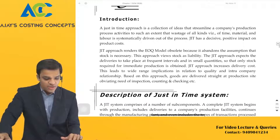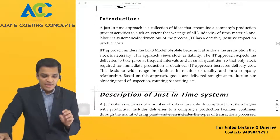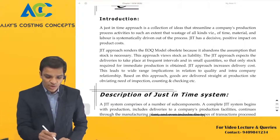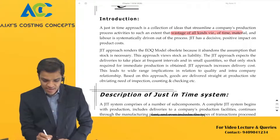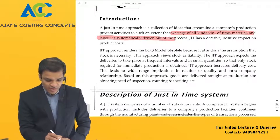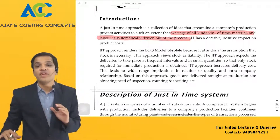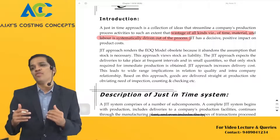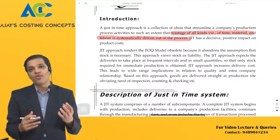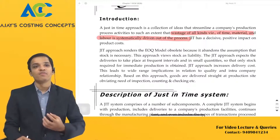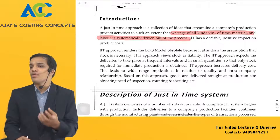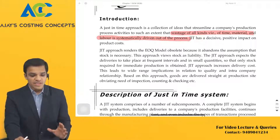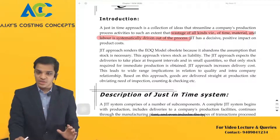Just-in-time is a collection of ideas that streamline a company's production process to such an extent that wastage of all kinds — time, material, and labor — is systematically driven out of the process. So there is no wastage. When you follow minimum and maximum order levels, there are chances of product wastage in storage, during carrying, or during quality and lab tests. All those wastages are removed in just-in-time. Just-in-time has a decisive positive impact on product cost.